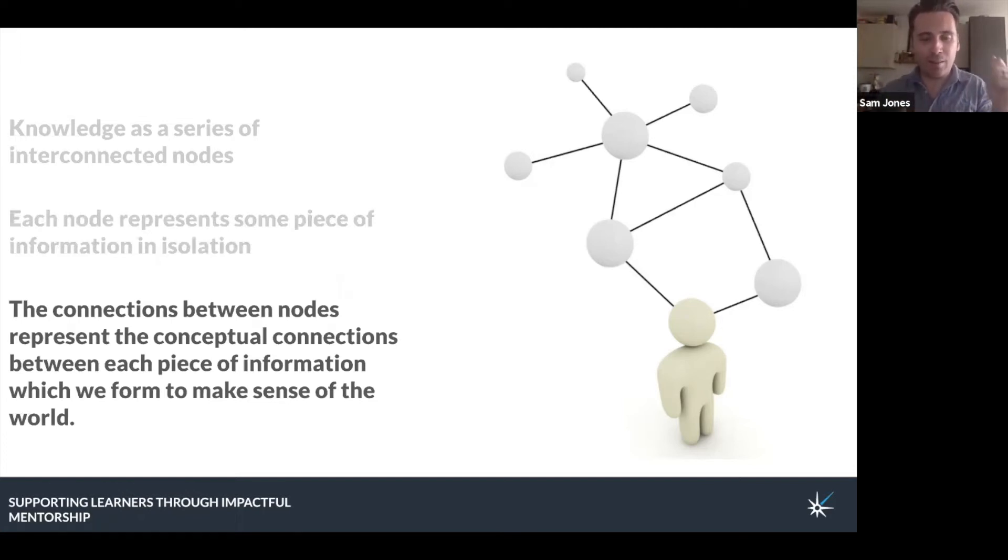At the most basic level, connectivism models knowledge as a set of interconnected nodes. Each of those nodes represents some piece of information that we might encounter and store away in our brains. The connections between those nodes represent our understanding of how those pieces of information interrelate and interplay with one another. Storing information alone doesn't qualify as learning, because we can have access to all the information in the world and still be the most ignorant person under the sun unless we can apply that knowledge in context. What connectivism says is that being knowledgeable is essentially a reflection of how we've connected these different pieces of information over time. So learning is therefore a process of forming, then strengthening, or in some cases realizing that the connections we've made are incorrect and then discarding them. We use those connections to form this mental model of how different pieces of information are related. From there, we build our own mental map of the world around us.